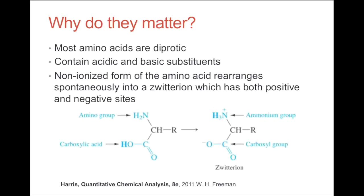Why do they matter? Most amino acids are diprotic, which means they have two protons to give. They contain acidic and basic substituents, and the un-ionized form of the amino acid rearranges spontaneously into a zwitterion, which has both positive and negative sites, as you can see from the scheme here. This is the zwitterion.